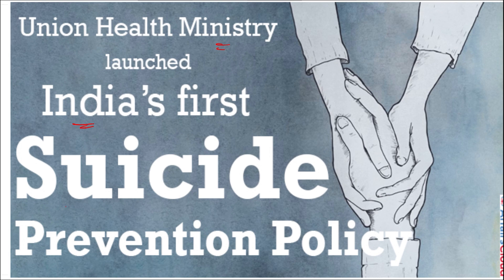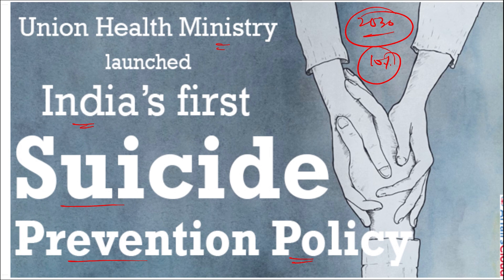The Union Health Ministry has launched India's first suicide prevention policy. The rate of suicide is increasing, and the policy aims to reduce suicide mortality by 10% by the year 2030. The reasons for suicide include high mental stress — students in particular face this due to exam pressure, which is one of the worst decisions one can make.